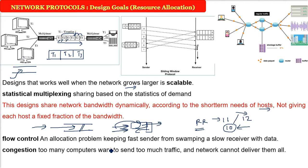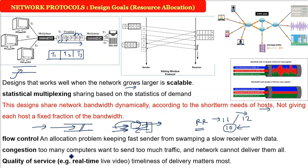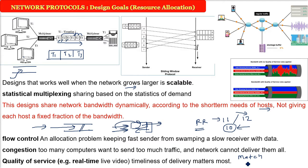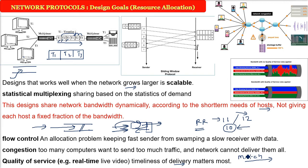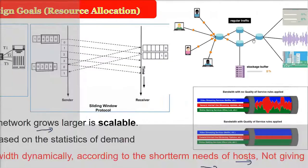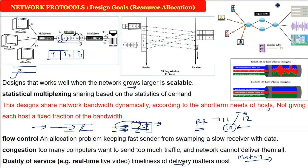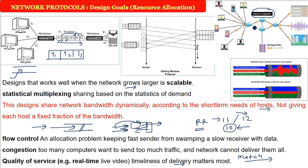One more aspect is quality of service. People will only accept a product when the quality is good. For example, if a cricket match is on, nobody wants to see a wicket taken five minutes late. For real-time live video, timeliness is the most important thing. Flow control, congestion, and quality of service are all involved.